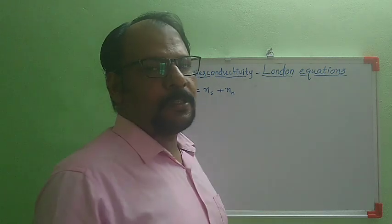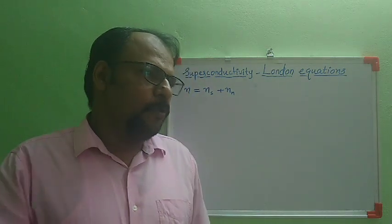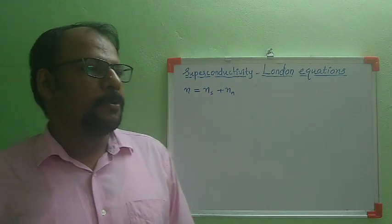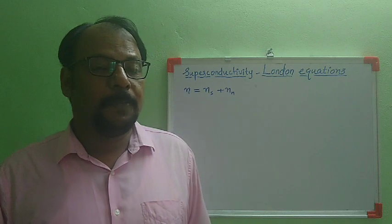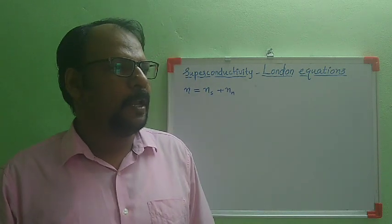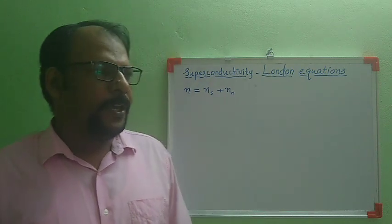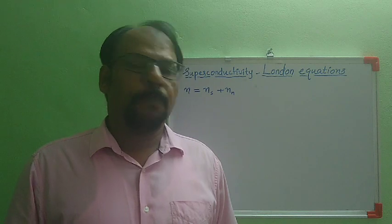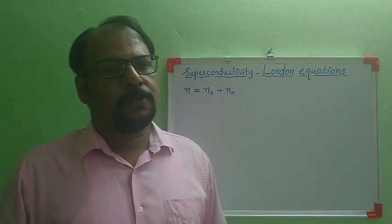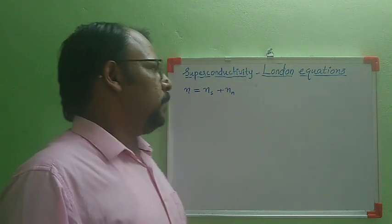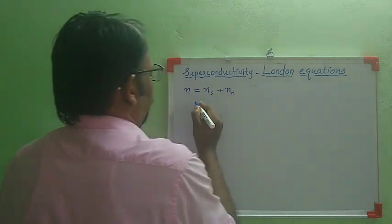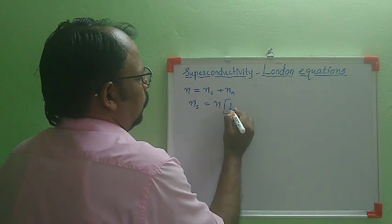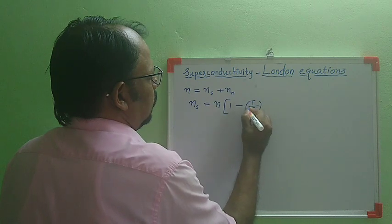Normal electrons behave like ordinary electrons moving through a viscous fluid; they undergo scattering and have some resistance. Super electrons have distinctly separate properties compared to normal electrons — they do not undergo any scattering and their resistance is zero. Gorter and Casimir proposed an equation for the number density of super electrons: Ns = N(1 - T/Tc)^4.